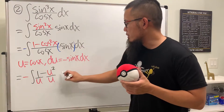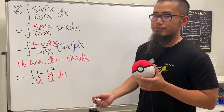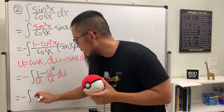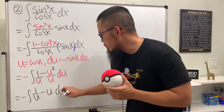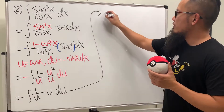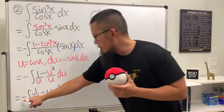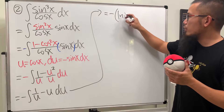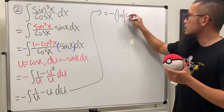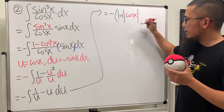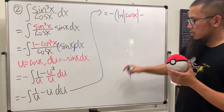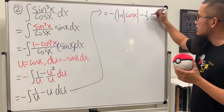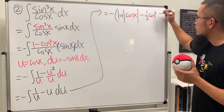We can simplify this: it becomes negative integral of one over u minus u du. For the first term we get negative ln absolute value of u, which is cosine x. Then we have minus one half u squared, and u is cosine x, so we have cosine squared x.